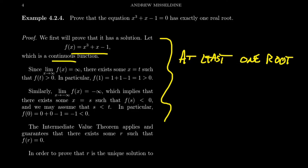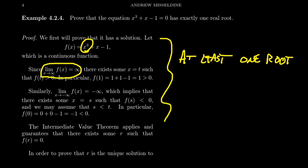Continuity of f is going to be important for the forthcoming intermediate value theorem. This function is a polynomial function, and the end behavior of a polynomial function is determined by its leading term, x cubed. Since this is x cubed, notice that as x goes to infinity, f of x also goes to infinity. If our function goes off towards infinity on the right-hand side, that means eventually the function has to be positive.